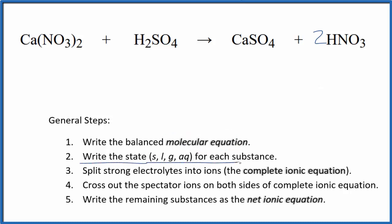Next, we write the state for each substance. That looks like this. If you know your solubility rules, compounds with the nitrate ion are very soluble, so we write AQ for the calcium nitrate.